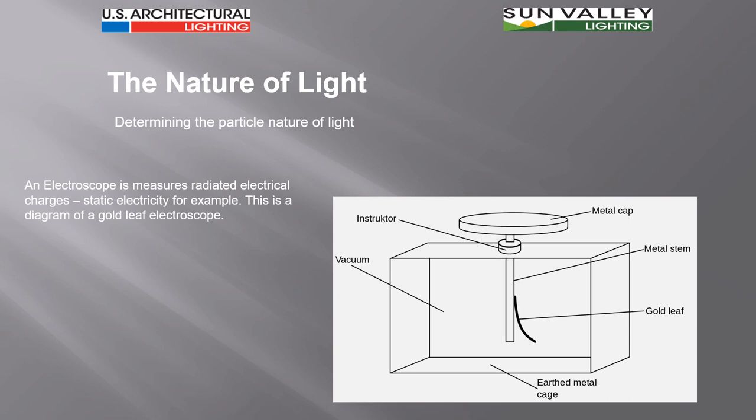In this gold leaf electroscope, the metal box, the container that you see here, would be made out of metal and a vacuum would be created on the inside. There's a metal cap with a stem on it that are the same material that extend down into the box and attached to it, not electrically or conductively but just attached to it, is a gold leaf.